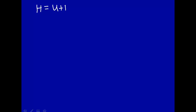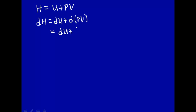The definition of enthalpy is H is equal to U plus PV. Let's write this in differential form: dH is equal to dU plus d(PV), which at constant pressure is equal to dU plus p·dV.